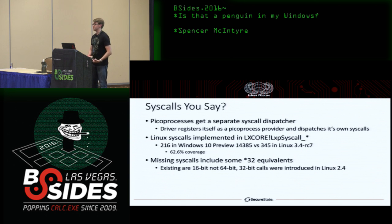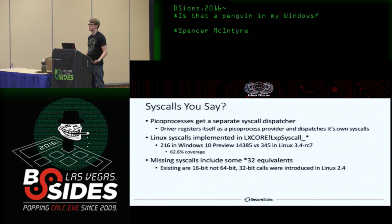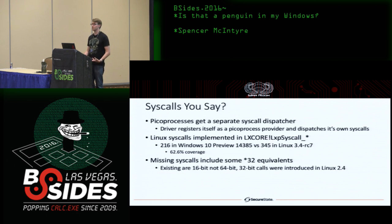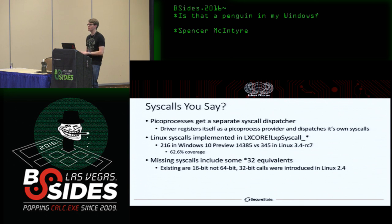Pico processes get a separate system call dispatch. This is very important because this is how 64-bit Linux binaries expect to communicate with the underlying system. The system call interface and file system interfaces are the two largest interfaces Linux binaries expect in order to execute on a system thinking they're actually on Linux. When the LX core driver is loaded and initializes the LXSS driver object, it registers itself as a Pico process provider, stating to the Windows kernel that Pico processes associated with it have their own system call interface. That is how system calls that would normally go through Linux are routed through the LX core driver, which provides the functionality.